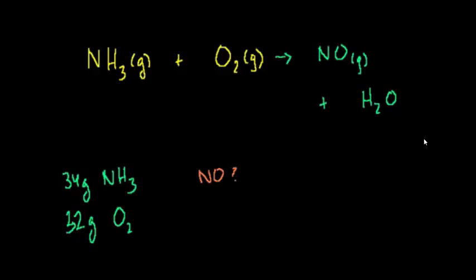This is a stoichiometry problem. The important thing first is to make sure we have a balanced equation before we start anything. And we don't have a balanced equation. The pattern is: start with the complicated stuff, leave the single-atom molecules for last, because those you can fix at the end without messing anything else up.